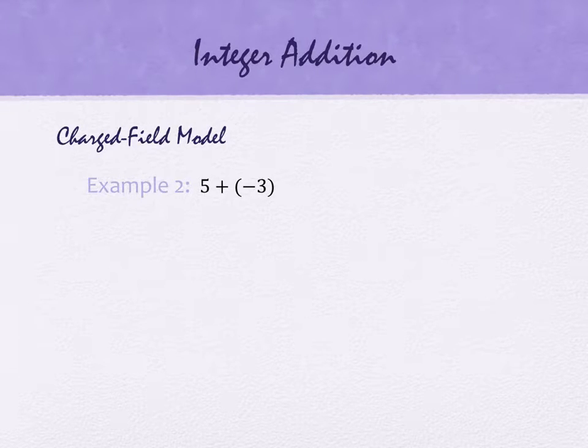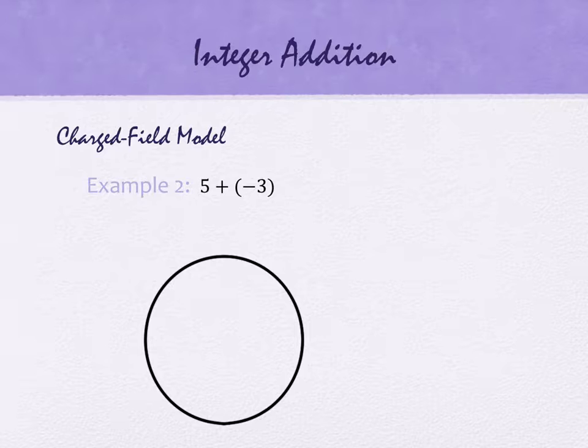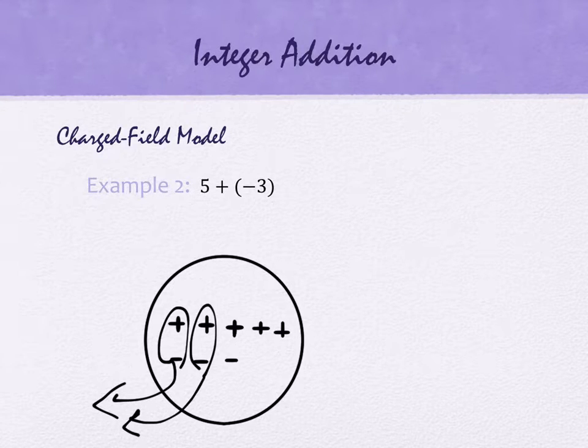Charged fields model. I've got the same exact expression I had before. You don't necessarily need colors for this. The idea is that we're going to use symbols of the positives and symbols of negatives. When we see the 5, we're going to write 5 pluses. And we see the negative, we're going to write 3 negatives. A balance of a positive charge and a negative charge balance each other out. We're taking the pairs of things that balance and removing them.